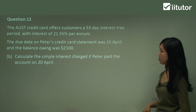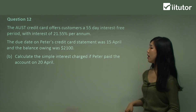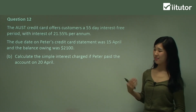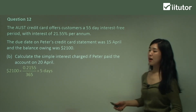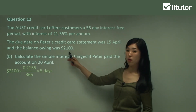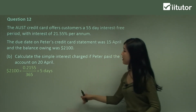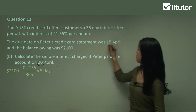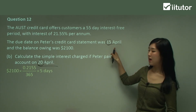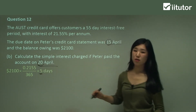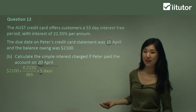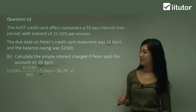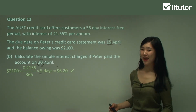Part B: calculate the simple interest charged if Peter paid the account on 20th of April. Now 20th of April is past the due date of the interest-free period, so yes, he will be charged interest. Using our simple interest formula: the balance owing of $2,100 will be our principal, and our rate is 21.55%. Because we're doing a daily rate, see that 20th of April versus 15th of April — that's five days. So he's five days over the interest-free period due date, and we charge interest for five days. Multiply it all together and you should get $6.20. It's really simple and pretty similar for all these questions. Okay, that was interest-free period.